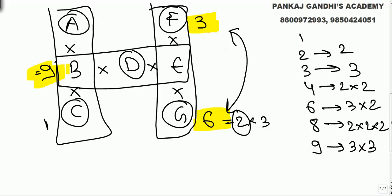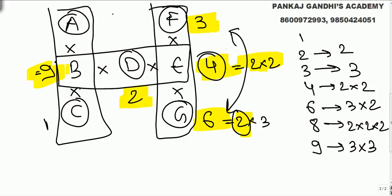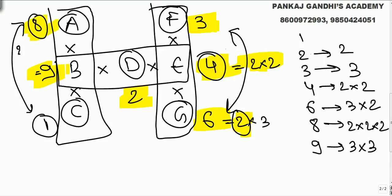Therefore e must compulsorily be four. With e as four we get two twos in that product; one more two gives three twos, which matches eight = two×two×two in the other product. Checking: in a·b·c we get three twos and two threes; in b·d·e we get two threes and one two plus two twos; in e·f·g we get three twos and two threes. All products equal seventy-two.